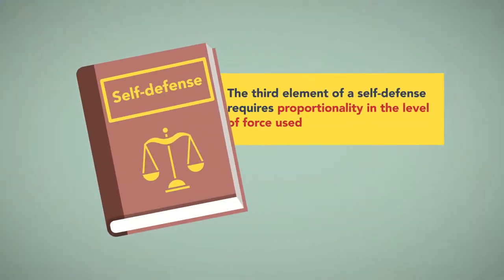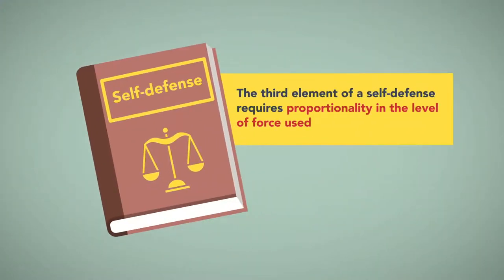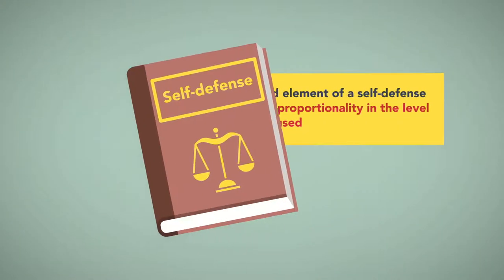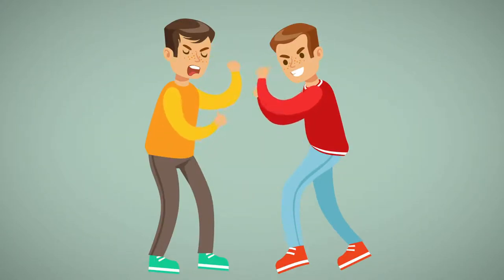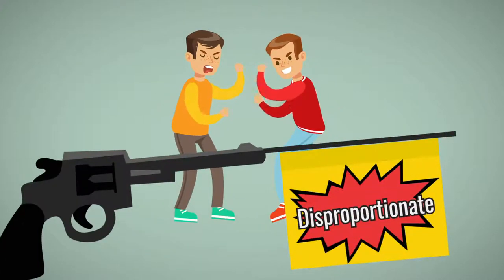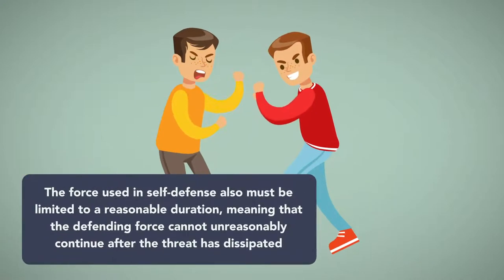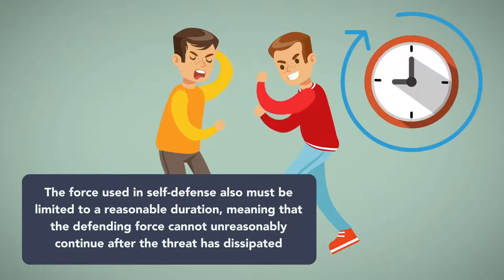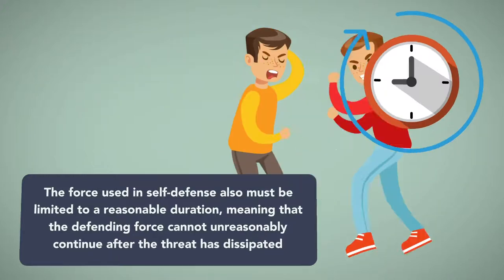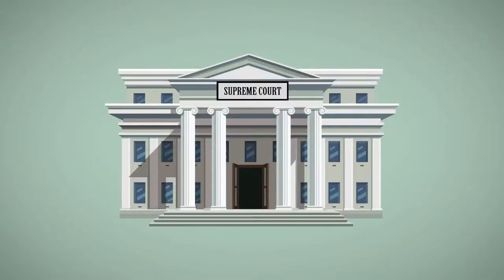The third element of self-defense requires proportionality in the level of force used. For example, when faced with the imminent harm of a fistfight, it is proportionate to defend yourself with your fists. Defending yourself by firing a gun is disproportionate. The force used in self-defense must also be limited to a reasonable duration, meaning that the defending force cannot unreasonably continue after the threat has dissipated.